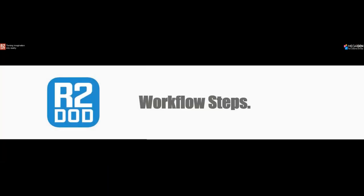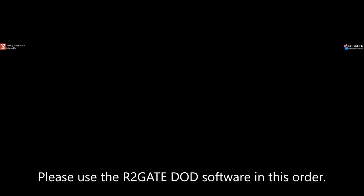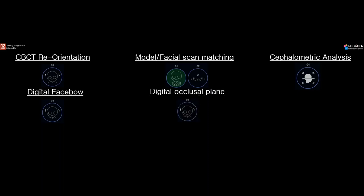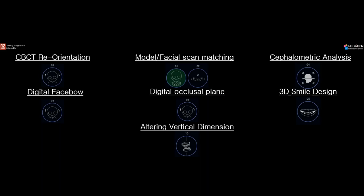In this video I'm going to explain the DOD Workflow Steps. First, we start with CBCT Reorientation — getting the CBCT scan and reorienting it to have a starting point for your treatment plan. Then we do the Model Facial Scan Matching in steps 1 and 2, Cephalometric Analysis in step 4, Digital Face Bow and Digital Occlusal Plane in step 3, 3D Smile Design, and then altering the vertical dimension if necessary.